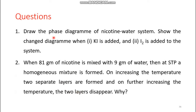This is the second question: draw the phase diagram of the nicotine-water system. When 81 g of nicotine is mixed with 9 g of water at STP, a homogeneous mixture is formed. On increasing the temperature, two separate layers are formed, and on further increasing the temperature the two layers disappear. STP corresponds to about 25°C, which is below the lower CST of 61°C, so the mixture is in the homogeneous zone.